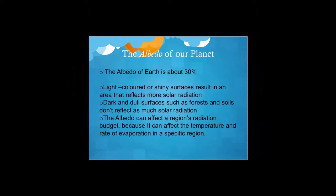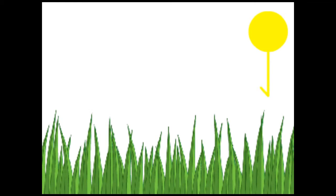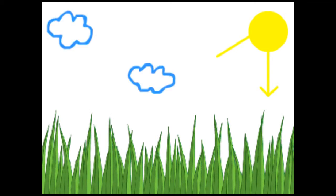The albedo of our planet: the albedo of Earth is about 30 percent. On Earth, light-colored or shiny surfaces result in areas that reflect more solar radiation — this includes surfaces such as ice. Dark and dull surfaces such as forests and soils don't reflect as much solar radiation. As you can see, radiation hits the Earth as well as the clouds. The radiation that hits the Earth gets both reflected and absorbed, and the radiation that hits the clouds is also absorbed and reflected.